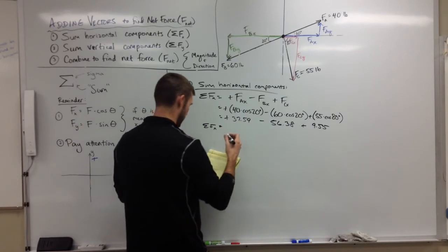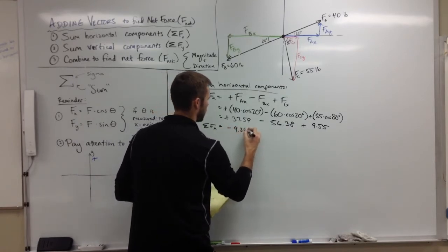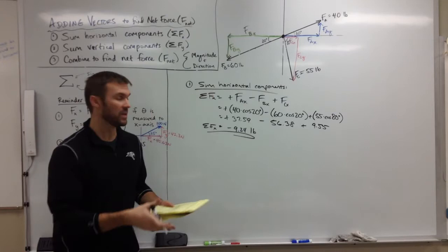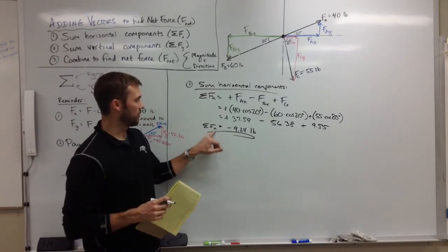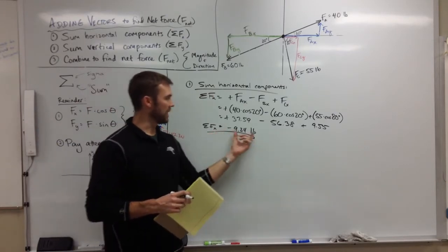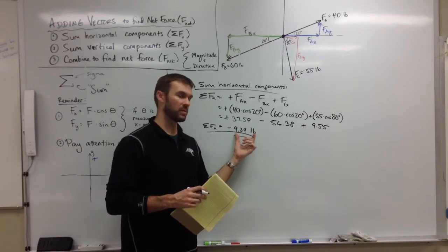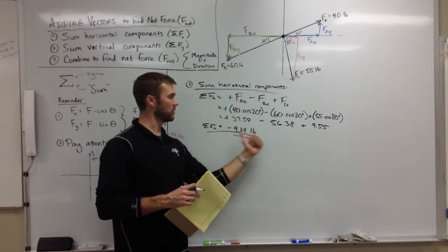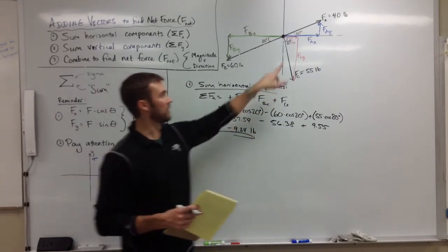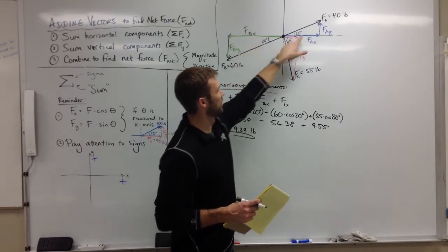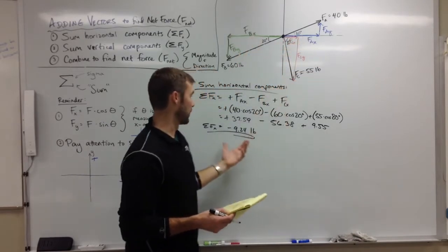What does that mean? Well, it means the sum of all the forces in the x direction has a magnitude of 9.24 pounds in the negative direction. It's 9.24 pounds to the left. It looked like the left one might be a little bit bigger than the sum of the two rightward ones. We were right.